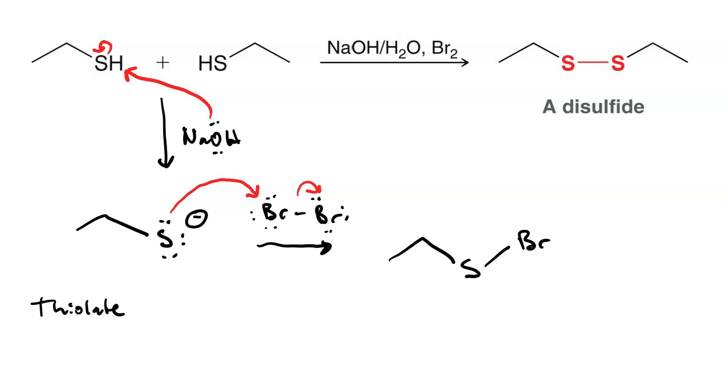Now we have a leaving group. And your other thiolate molecule, a strong nucleophile, is going to do SN2 attack. Generating the disulfide.